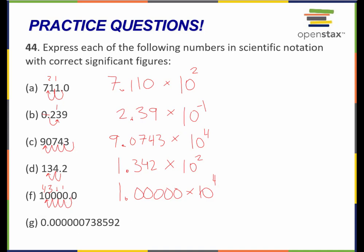Let's try this one. All of these first zeros are leading zeros, so those are all insignificant. I can ignore all those. I move the decimal point 7 places to the right. All of these are significant — 7.38592 times 10 to the negative 7. So this is how I would represent all of these numbers in scientific notation.